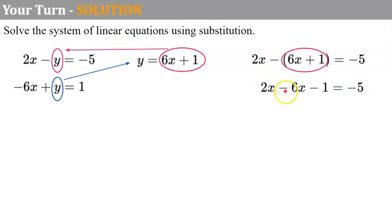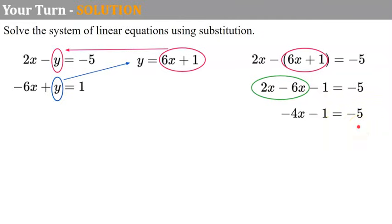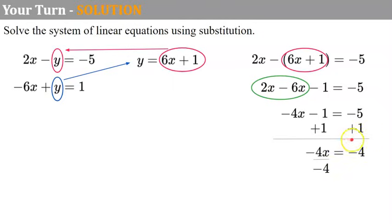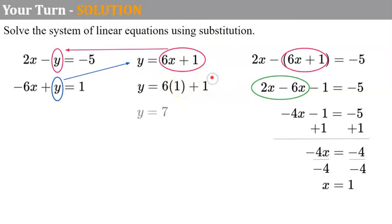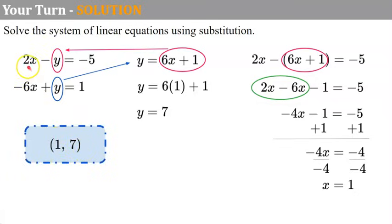So we have 2x subtract 6x subtract 1. Combining like terms: 2x subtract 6x is negative 4x, subtract 1, equals negative 5. To isolate negative 4x, we add 1 to each side, giving negative 4x equals negative 4. Dividing both sides by negative 4, x equals positive 1. Bringing that back up, y equals 6 times 1 plus 1, which is 7. So our ordered pair is 1, 7. Let's check: 2 times 1 subtract 7 is negative 5 ✓. Negative 6 times 1 plus 7 equals 1 ✓. It checks.